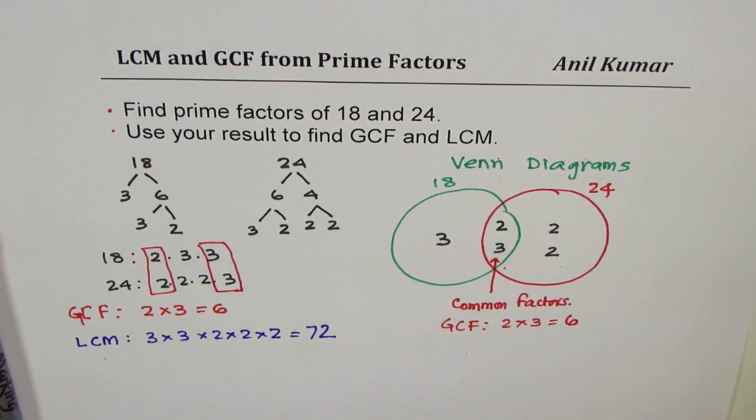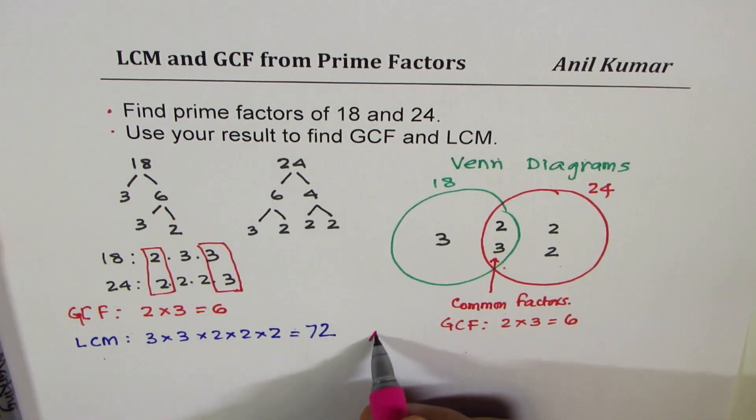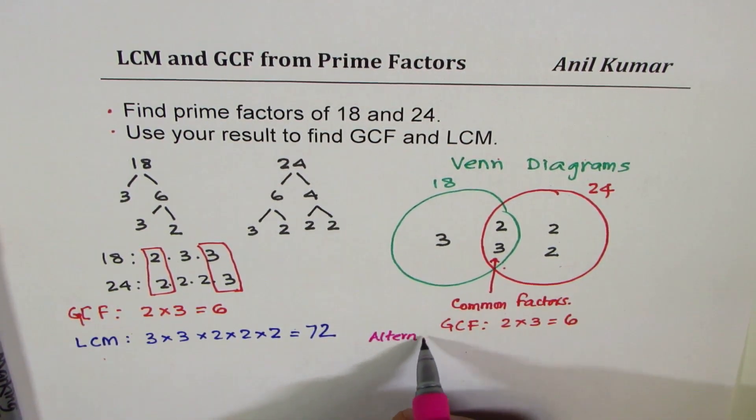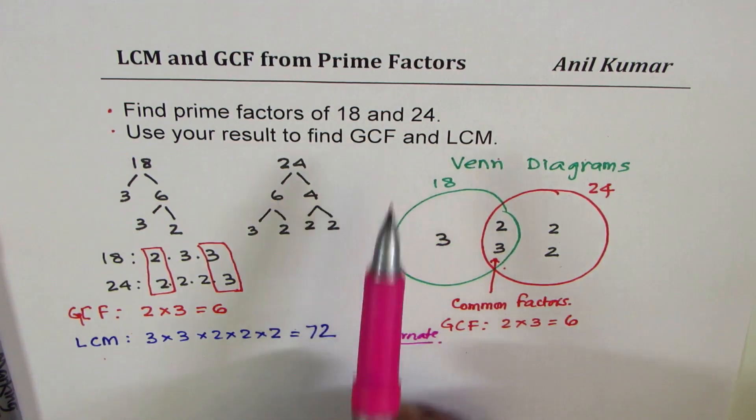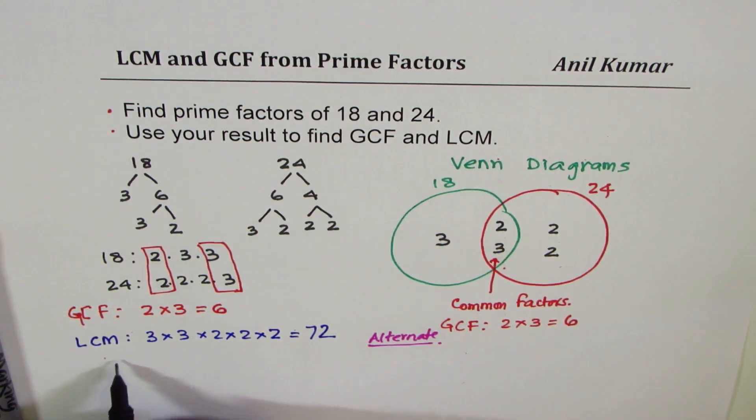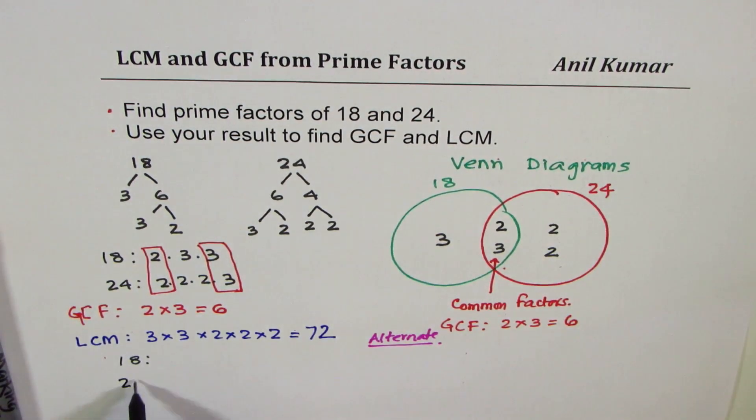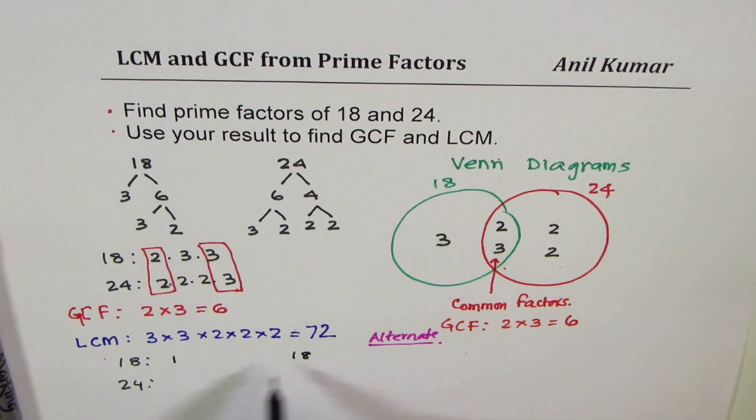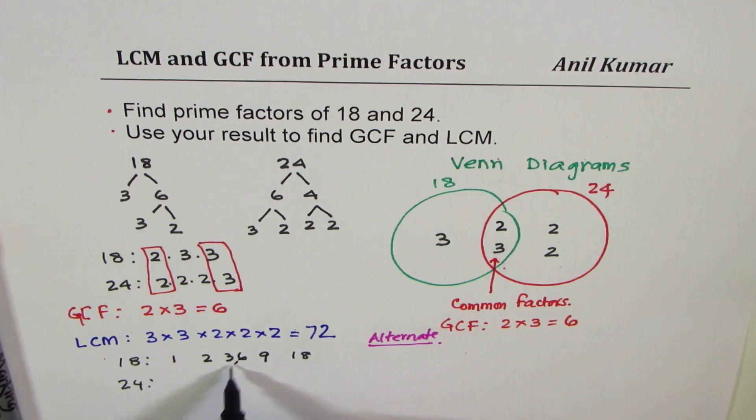So let me just show you also the method which you know, which we'll say alternate method. Alternate method to find LCM and GCF was to write all the factors of 18 and 24. So the factors of 18 are 1 times 18, 2 times 9, and 3 times 6. So these are the factors of 18.